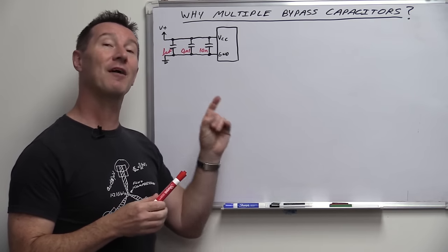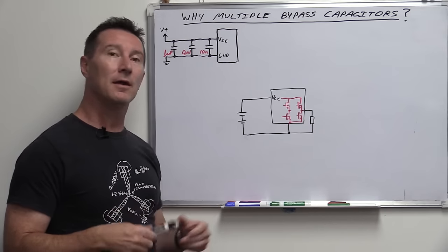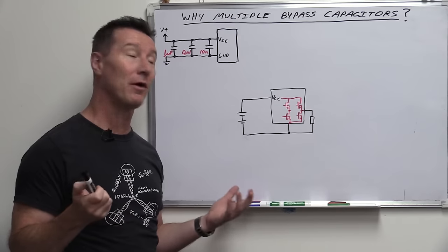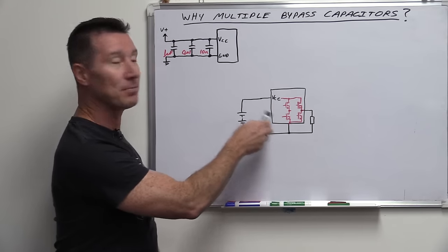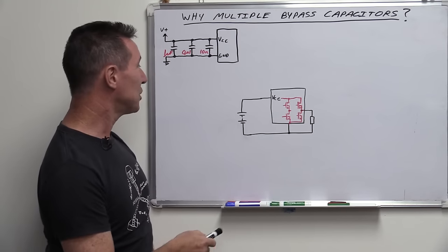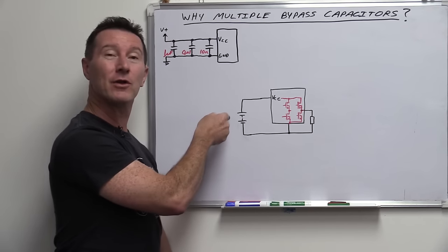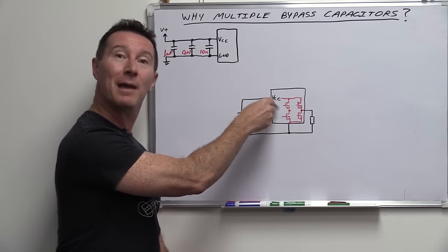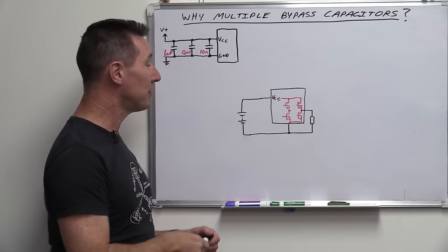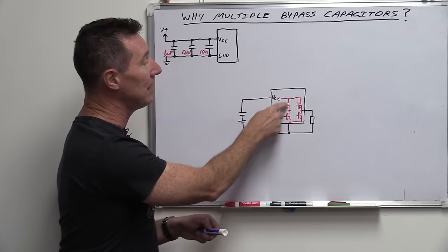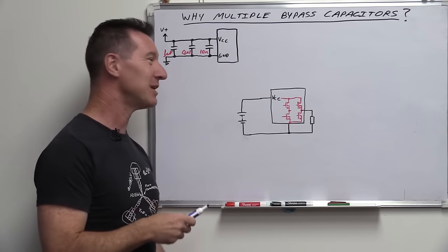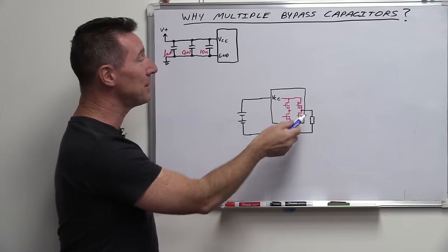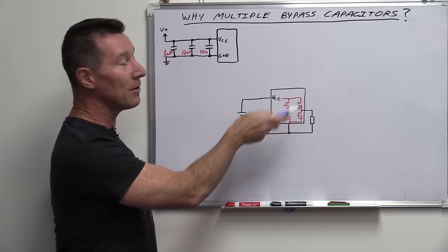Before we answer that, we have to look at what bypassing actually is. In an ideal world, you wouldn't need bypassing at all — it would be completely pointless. Take a chip like this: it does whatever it happens to do. We've got a battery or power supply here, and we've got a load consuming power inside the chip to do various switching. I've shown this with two MOSFETs — let's assume it's a CMOS chip doing internal switching, with a totem pole output driving loads.